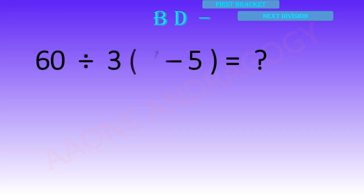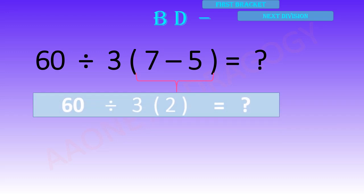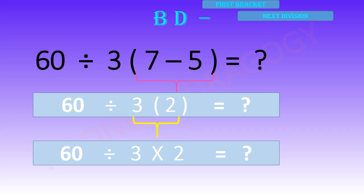Now following the B-D rule, here bracket 7 minus 5 equals 2. So simply 60 divided by 3 into 2, because always the operation for the bracket equals multiplication.